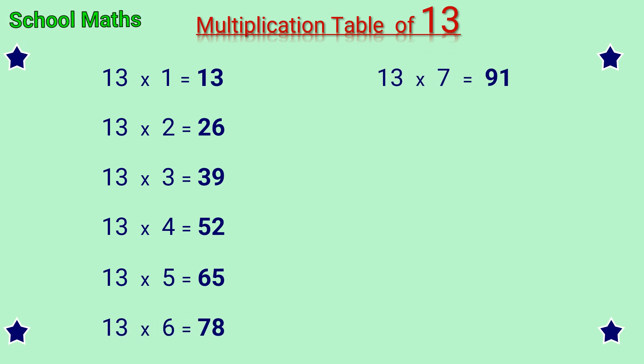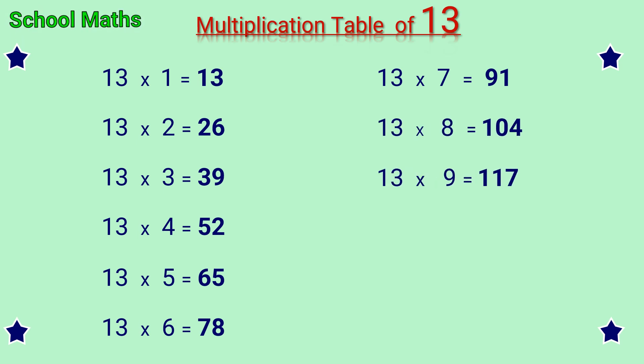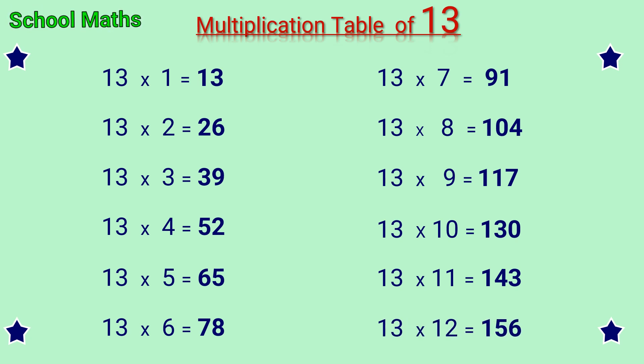13 sevens are 91, 13 eights are 104, 13 nines are 117, 13 tens are 130, 13 elevens are 143 and 13 twelves are 156.